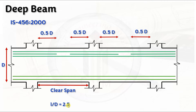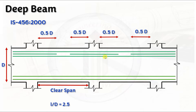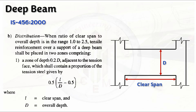When the l/d ratio equals 2.5, the curtailment is as follows: as per IS 456:2000, half of the reinforcement needs to be curtailed at a distance of 0.5d from the face of the support, and the remaining half must be extended over the full span. So in the required Ast, half is provided throughout the full span and half is curtailed at 0.5d from the face of the support.